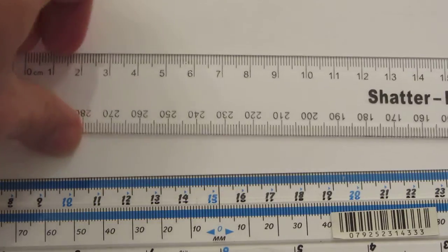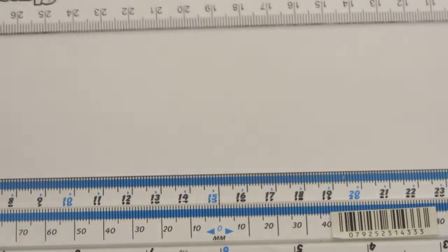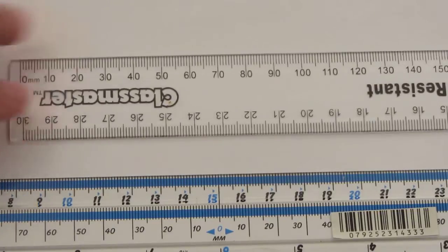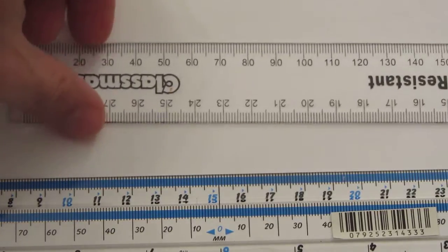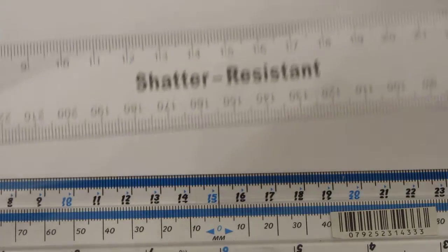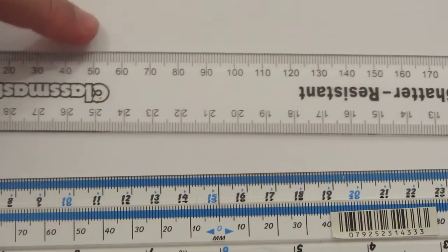Sometimes it's useful to be able to measure in millimeters, so the people who designed this ruler have given you a scale in millimeters on the other side. All I did there was just turn the ruler around like this. So we've got millimeters on the other side.